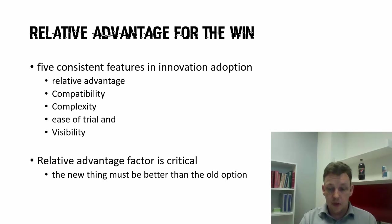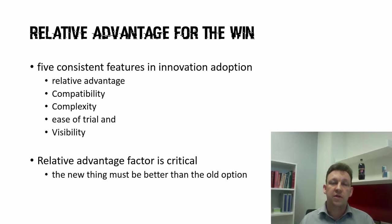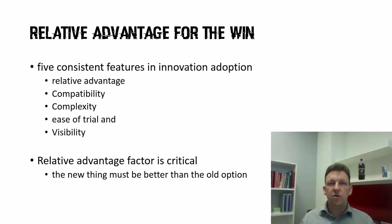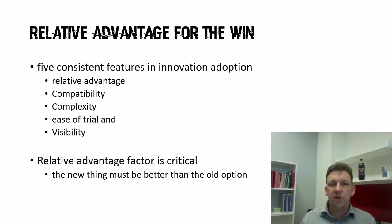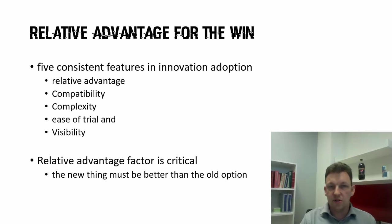The key theory for innovation for you is relative advantage. Innovation adoption theory has five consistent features — it's the Rogers 1995 model. It's well worth getting yourself well-versed in this because these five are the absolute keys to getting a new idea across. But the one that beats everything else consistently is relative advantage. What do you do that's just that little bit better for your customer than one of your competitors or what they were doing before? Be very conscious of your relative advantage — what is it that's giving you your edge and how are you going to maintain it?